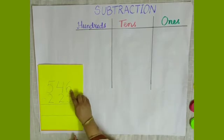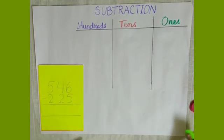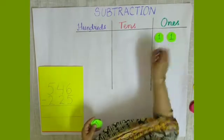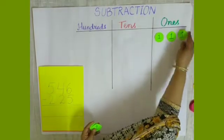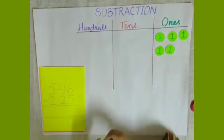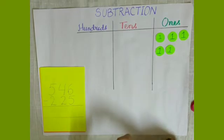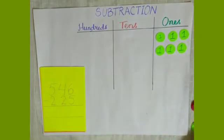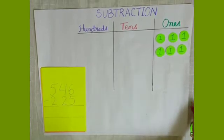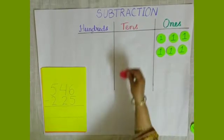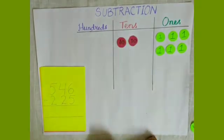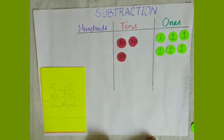In the 1s column we have 6, so we are going to place 6 ones: 1, 2, 3, 4, 5 and 6. In the 10s column we have 4 tens, so I will place 4 tens here: 1, 2, 3 and 4.